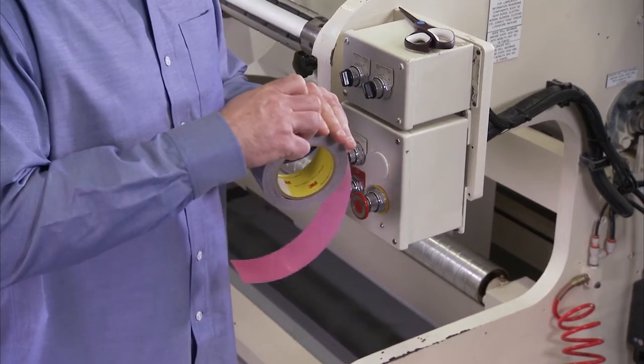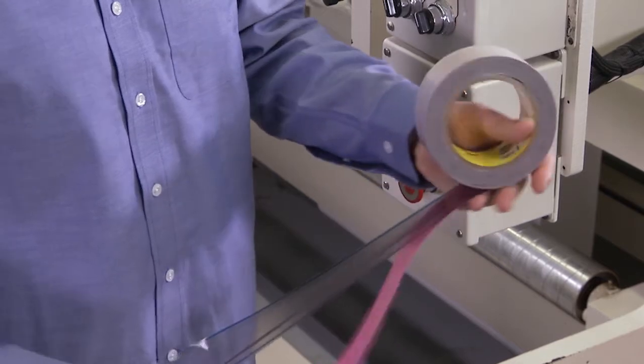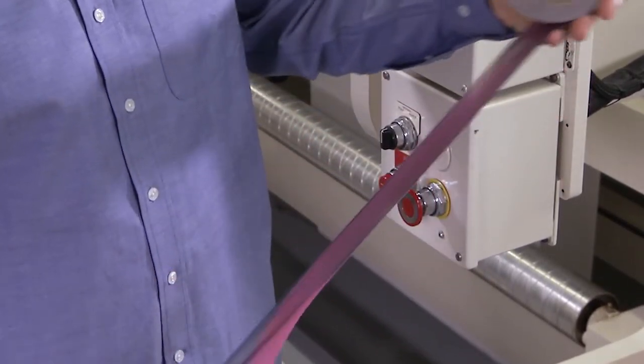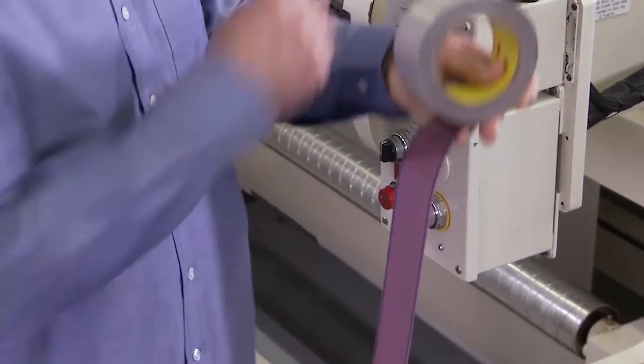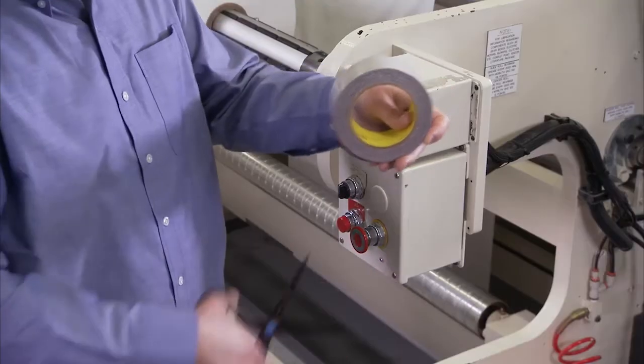If this does happen, there is a quick and easy fix. Peel the gray layer all the way around the roll until the top and bottom layers are back together. Cut the split portion off the roll. The tape is now back to its original construction.